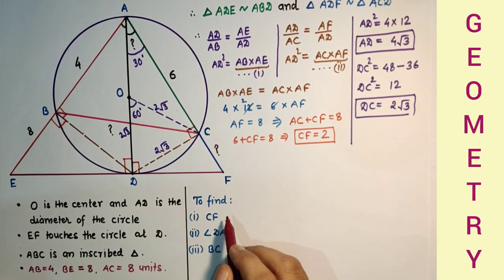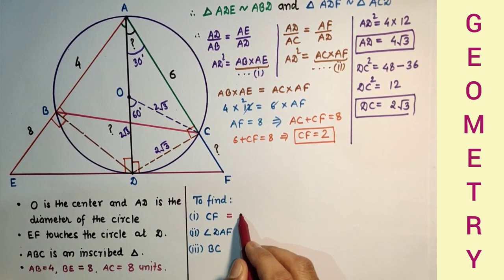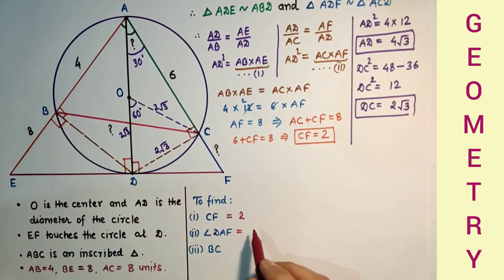So angle DAF we found as 30 degrees, we found CF as 2 units, and angle DAF is 30 degrees.